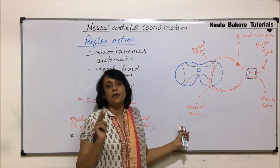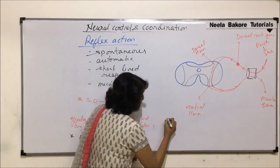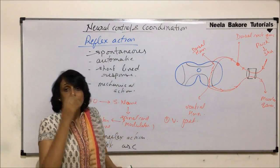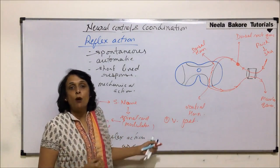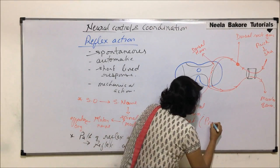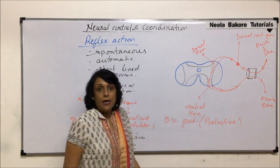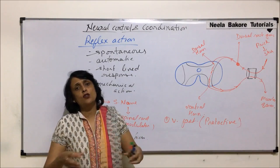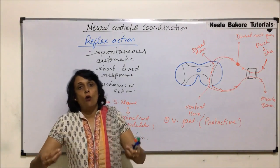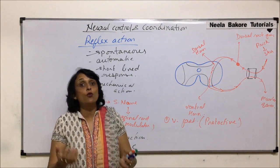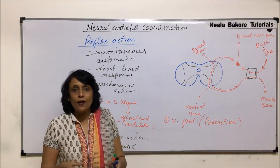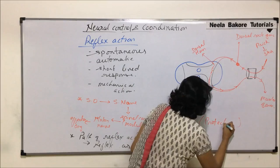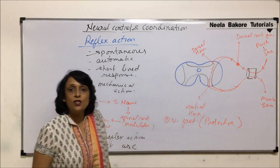There are two distinct advantages of reflex action. Number one, it is very fast, and because it is very fast, it protects our body — it is a protective mechanism. If you are holding that hot vessel and the response were slow, your skin cells would get burnt and it would cause damage to your tissue. But because the response is very quick, as soon as you touch it you leave it. So the fast action is protective.